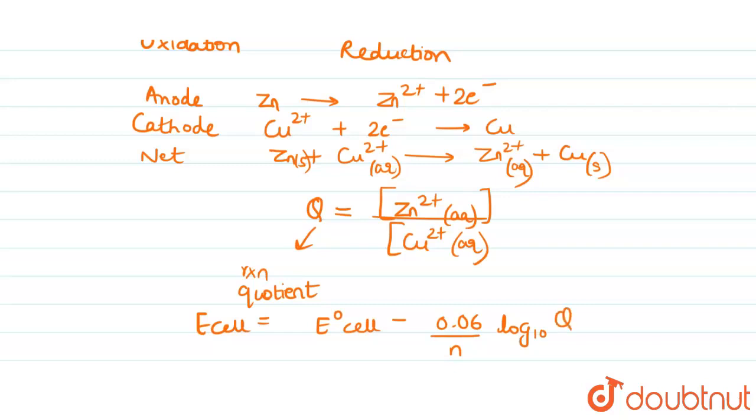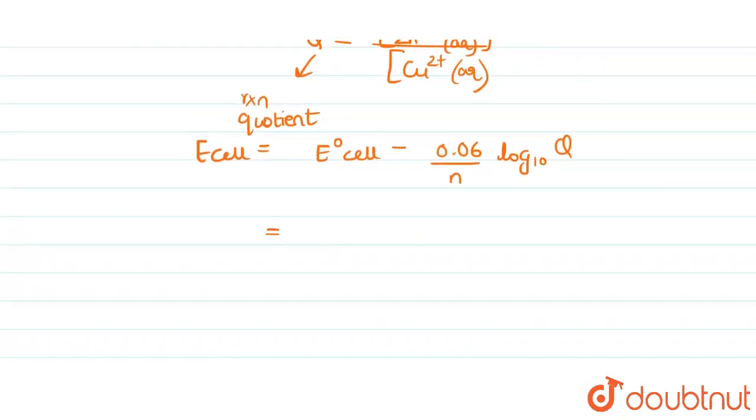So Q we will write it as E naught cell minus 0.06 upon N log to the base 10 and Q is Zn2+ upon Cu2+.